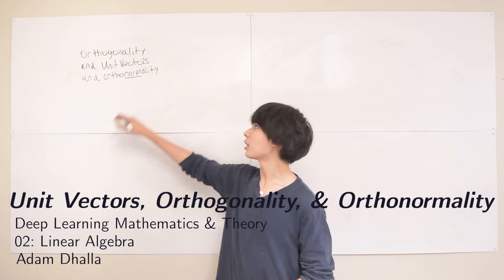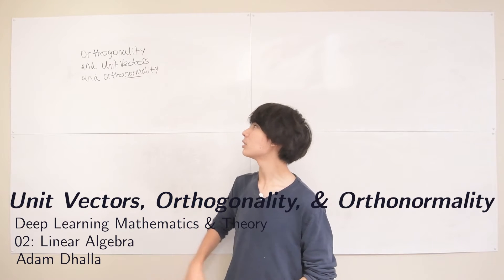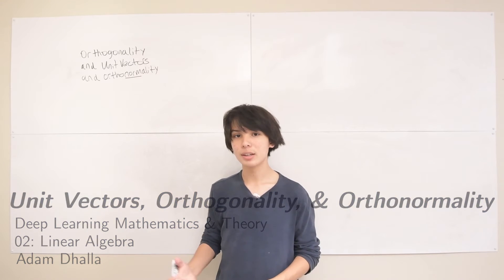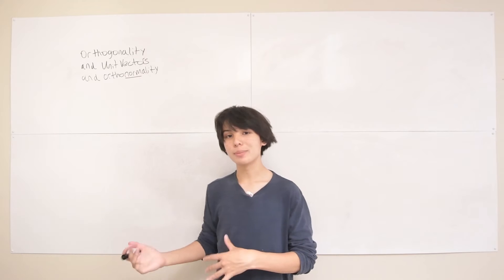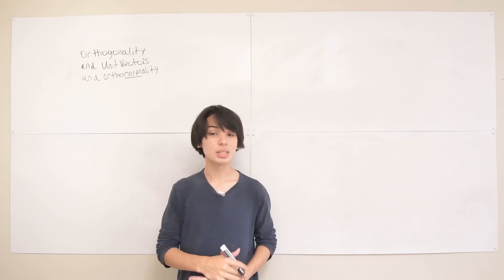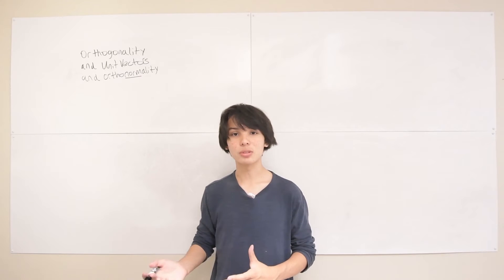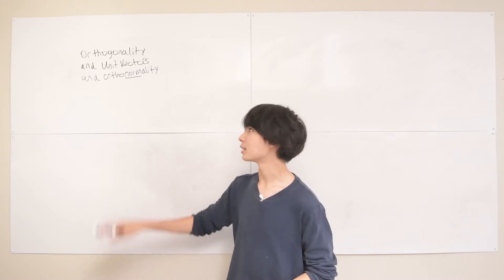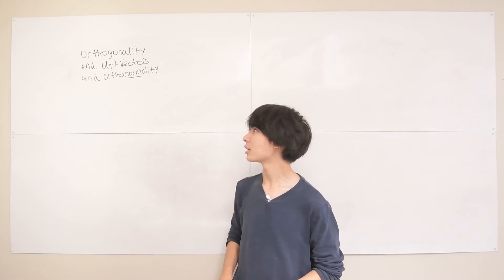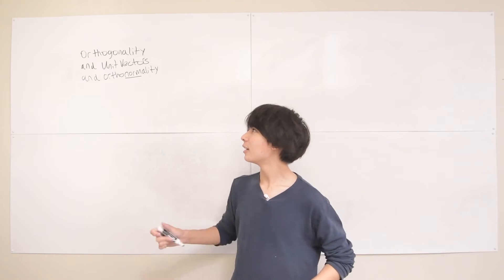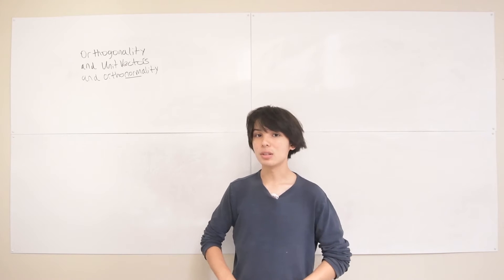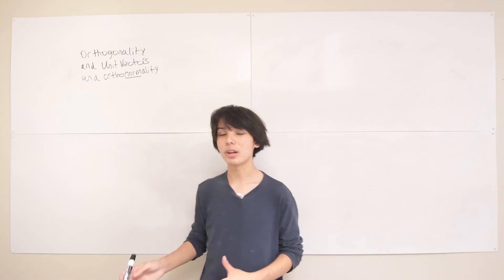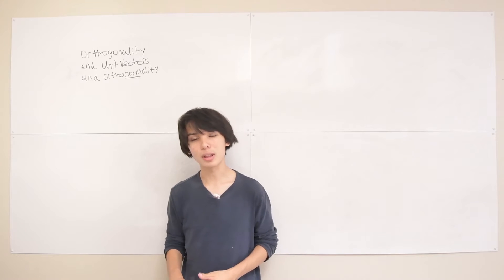In this lecture, I'll be talking about orthogonality, unit vectors, and orthonormality and how they're related. This goes with chapter 2.6 of the Deep Learning textbook that this course is accompanied with, so I highly encourage you to read 2.6 after watching this lecture. We're going to start off with unit vectors and then see how that leads us to a discussion on orthogonality and orthonormality.